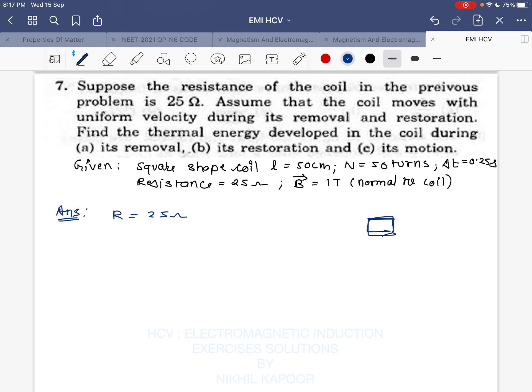This is a square coil having a large number of turns in square form. It is being moved in and out of the magnetic field, then taken away and again taken in. Assume that the coil moves with uniform speed during removal and restoration - the coil is being taken out of the field and again put into the field.